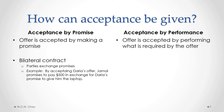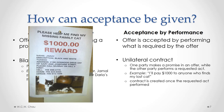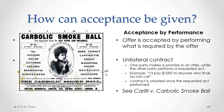For acceptance by performance, an offer is accepted by the other party performing what is required by the offer. This is called a unilateral contract, where one party makes a promise in an offer while the other party performs a requested act set out by the terms of the offer. A classic example is when someone loses a cat — they put up a sign saying 'I'll pay you $1,000 to anyone who finds my lost cat.' You promise to pay $1,000 in exchange for the performance, which is the other person going out and finding and returning your cat. So the contract is created once that requested act — the finding and returning of the cat — is performed.